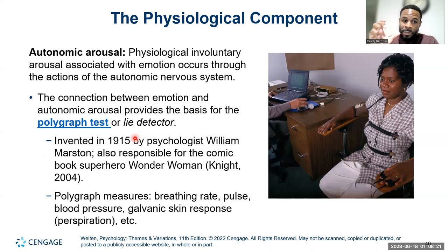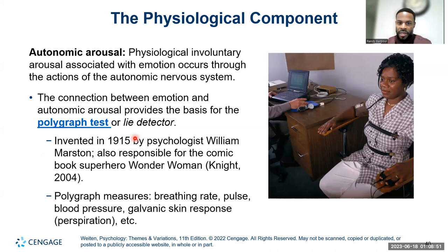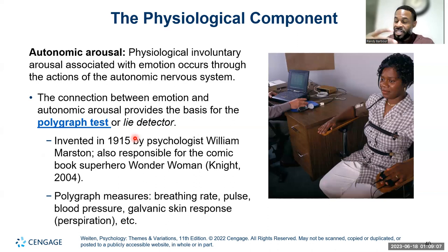I prefer to call it a polygraph test because you can't necessarily detect a lie — all you're detecting is an autonomic or physiological response to the emotion someone is experiencing. We'd like to think that when someone is telling a lie, they experience fear or anxiety, which gives a different physiological response. The polygraph test was invented by William Marston — fun fact, he's also responsible for coming up with the character Wonder Woman. He invented it to determine the different physiological responses associated with different emotions.